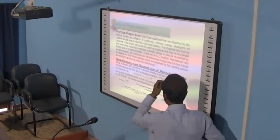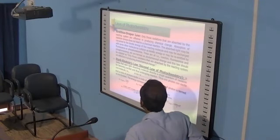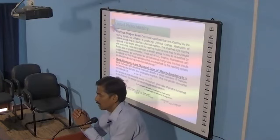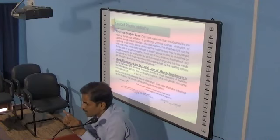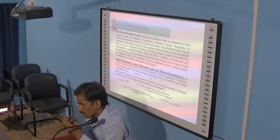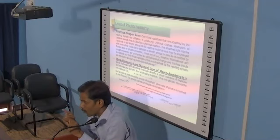The second law of photochemistry is also termed as Stark-Einstein's law. It was stated by Stark and the thermodynamic derivation was proposed by Einstein; it is termed as Stark-Einstein's law or the law of photochemical equivalence.